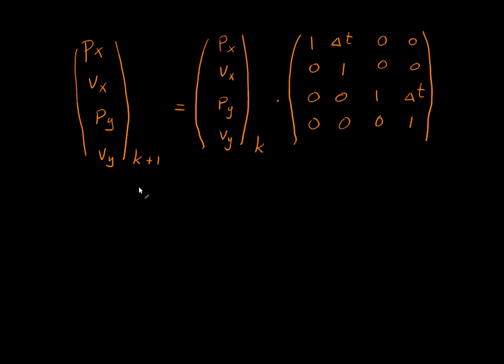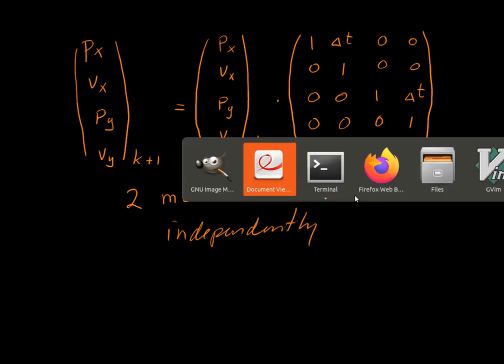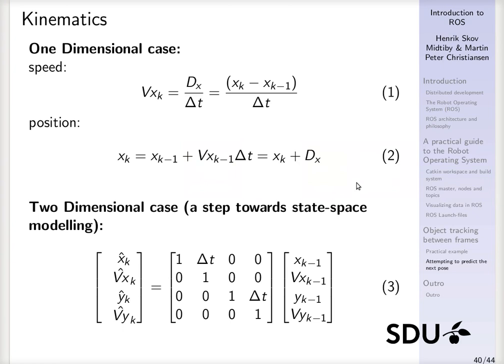So this will be two motions tracked independently using the same model. So this is what can be written here. Oh, we are off by K plus one or K minus one.